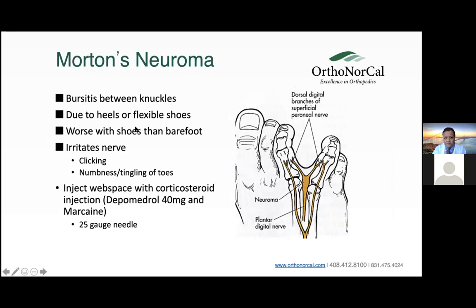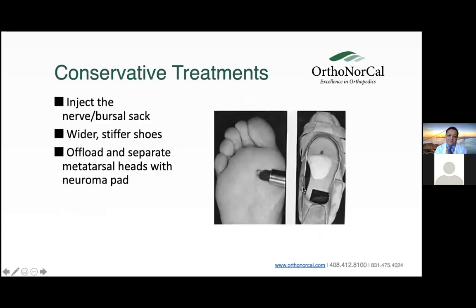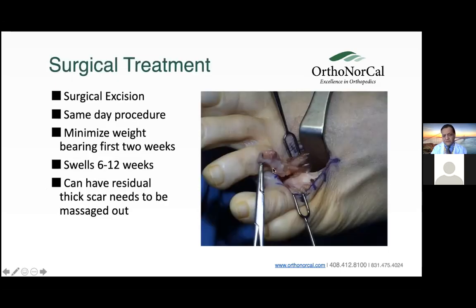A neuroma is inflammation or bursitis between the knuckles — an inflammatory sac created on the nerves. It can occur between the second and third toes, or the third and fourth toes, and comes from bad shoe wear, genetics, or trauma. Patients may experience clicking or numbness into their toes. We normally inject it with a corticosteroid, add a metatarsal pad, and recommend a wider, stiffer shoe. This avoids surgery in about 80 to 85% of cases. Surgical incision to remove the neuroma is rarely needed; it swells for six to twelve weeks afterwards.